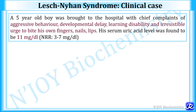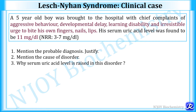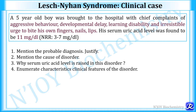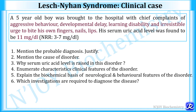Let's study Lesch-Nyhan syndrome with the help of a clinical case scenario. A 5-year-old boy was brought to hospital with chief complaints of aggressive behavior, developmental delay, learning disability, and an irresistible urge to bite his own fingers and nails. His serum uric acid level was 11 mg/dL; the normal reference range is 3–7 mg/dL. Questions that can be asked include: the probable diagnosis and justification, cause of the disorder, why serum uric acid is raised, characteristic features, biochemical basis of clinical features, required investigations, and management.